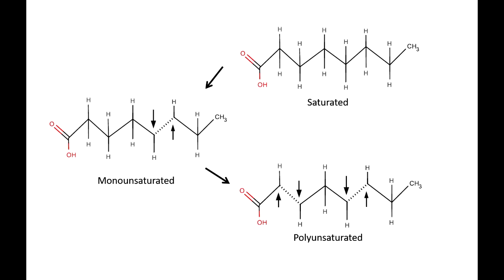Monounsaturated fats come up next. As you can see, there are two arrows pointing to one bond — that one is for the mono. There's one area that is not saturated with hydrogens. Moving further to the right, you see the polyunsaturated fat, which has many arrows pointing to many unbound carbons — poly meaning many unsaturated bonds. These are areas where free radicals can bind when storing or cooking these fats, combining with those areas and making the fats oxidized.